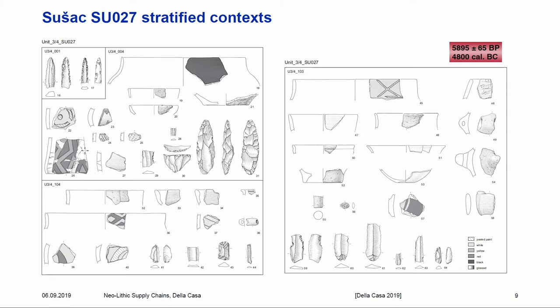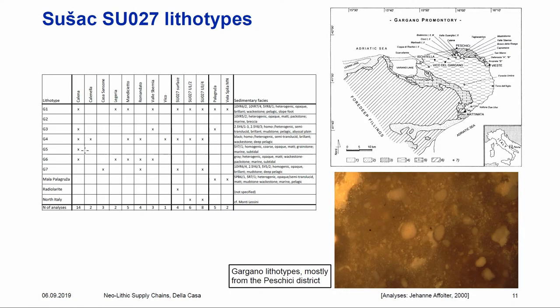Back in 2000, the first microfacial analysis proved a Gargano provenance of the lithics from SUO27 and other sites on Suchatz Island. This was work done by Gianna Folter, who identified several Gargano lithotypes — mostly from the Peschici area — and was able to relate our Suchatz finds, and also material from Palagruza and Vela Spila excavations, to that flint source. At that time it was not widely recognized that Gargano flint supplied most of the Adriatic coast from the early Neolithic.